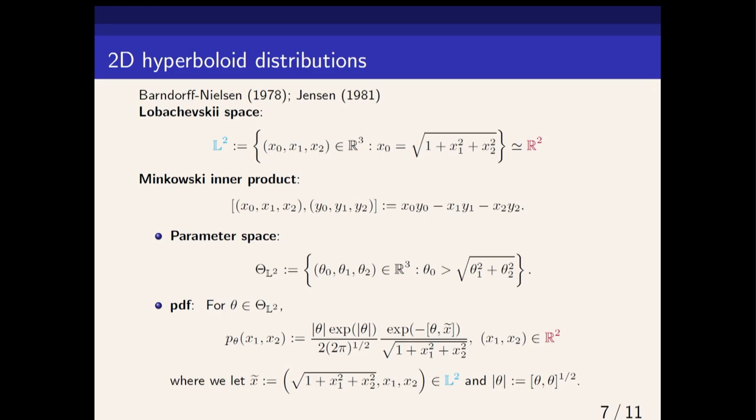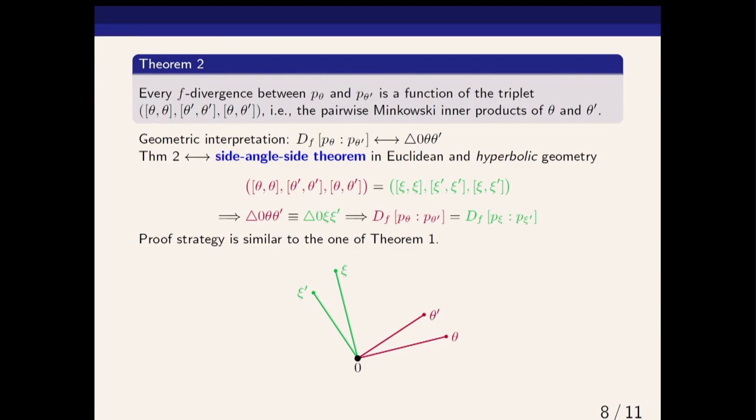We define the parameter space like that for the PDF. If you look at this paper, you will get such a thing. We are going to introduce a notation x̃ to be this lifting: we have x₁, x₂ and we put it on the hyperbolic sheet. We take this absolute valuation to be the square root of the Minkowski inner product.